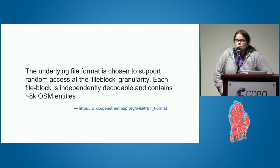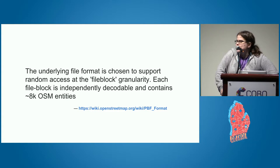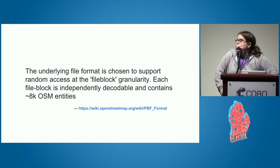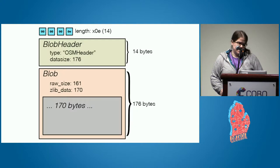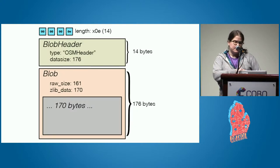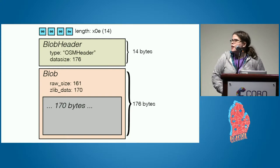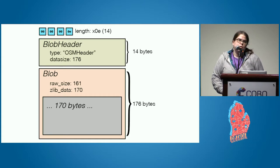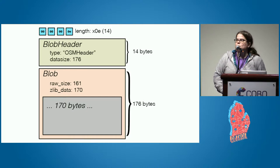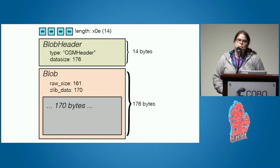I started digging into the format itself — check out that tutorial for more on that — but the cool thing is that the underlying file format supports random access at the file block granularity. Basically, these four bytes at the top tell you what the length of the next bit of data is, so you can actually skip over them as much as you want. And if you use HTTP partial range requests, that allows you to go to any part of this 40 gigabyte file and pick up wherever you want.